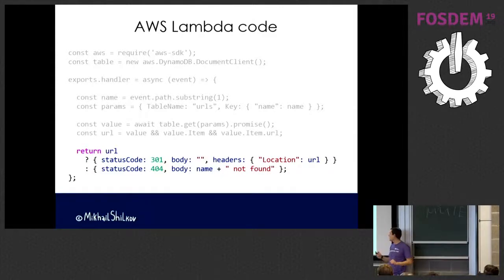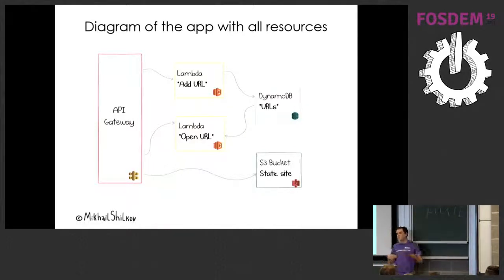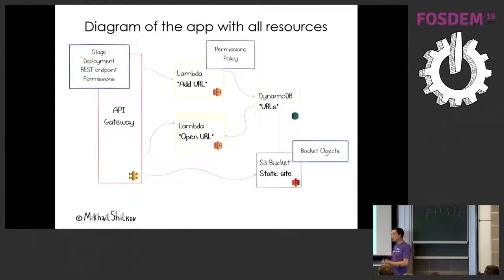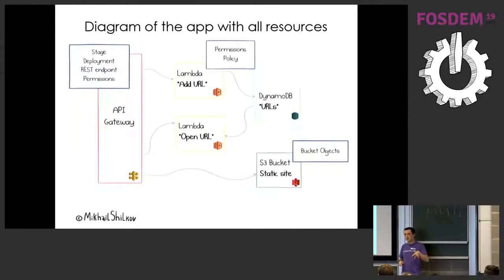The actual setup is more complicated than my first diagram because Lambda can't work directly with HTTP, so I need to put an API Gateway in front of it. I also need to store my static site somewhere - I chose an S3 bucket, which is Amazon's file store. I need to wire everything together: set up all the permissions from API Gateway to Lambdas, from Lambdas to Dynamo, define API Gateway stages, deployments, and endpoints. When I count it all up, it's about 20 resources to provision just to run this small application.